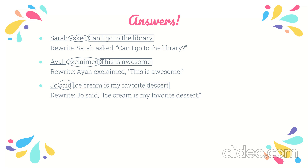The same applies for the second sentence. For 'exclaimed,' you put an exclamation point at the end — before the quotation mark, after the last word. The third one is similar to our original example and ends with a period.